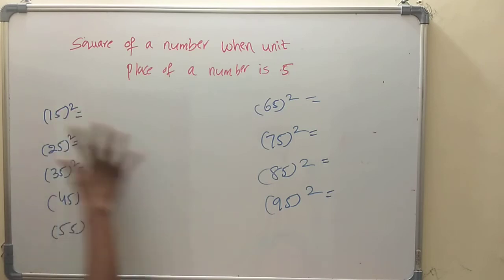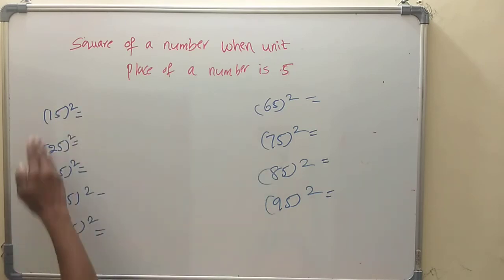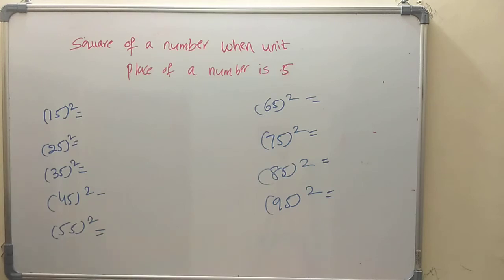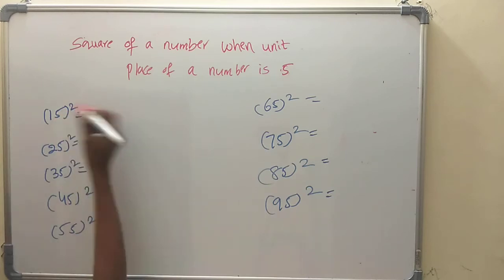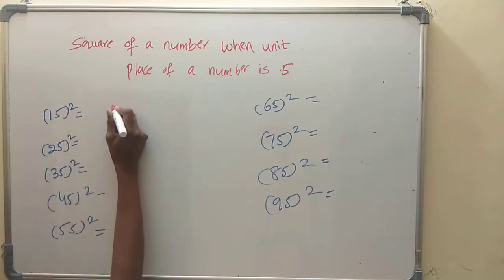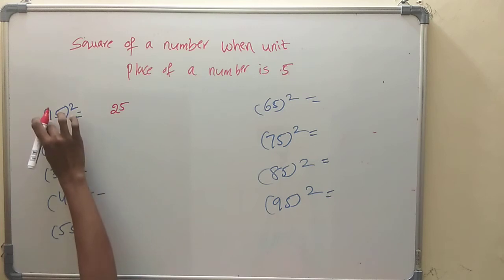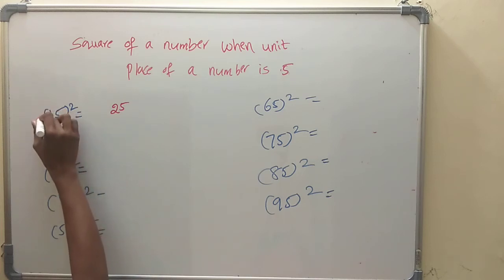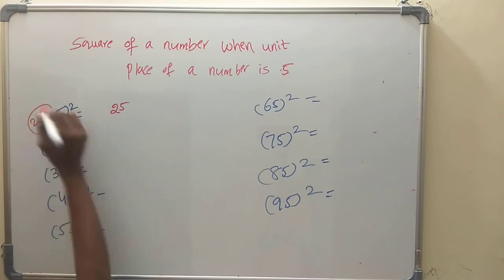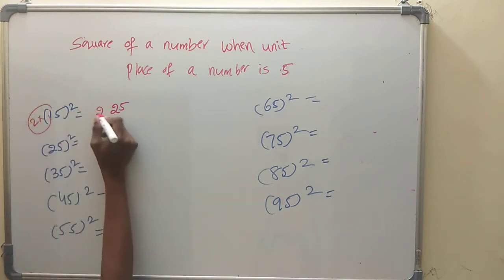Unit digits are 5. This is the shortcut: 5 squared always ends in 25. Here the unit digits are 5, and the next number after the tens digit is used. For 15: the tens digit is 1, next number is 2, so 1 into 2 is 2, giving 225.